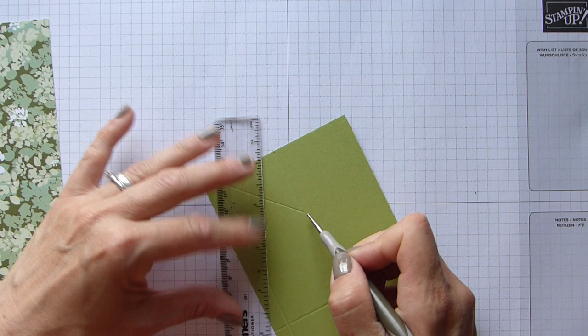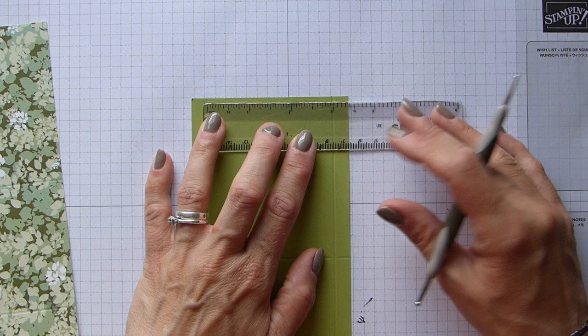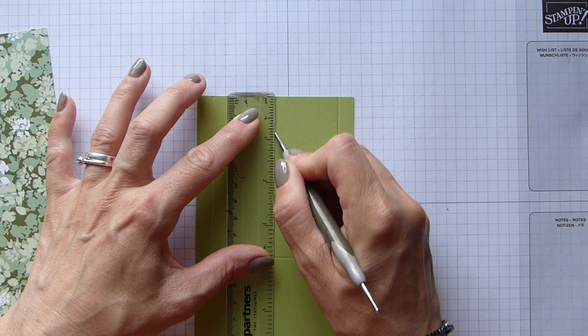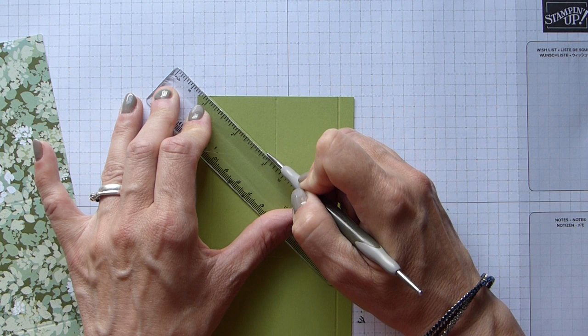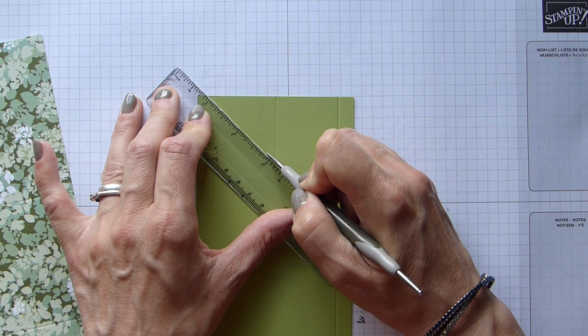Rotate and do exactly the same again. So center at 1 and a half, score down 1 and a half which is 4 centimeters, and then we're going from the bottom of the score line out and up to those score lines on either side.